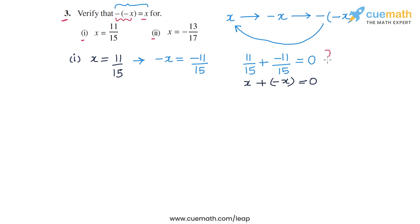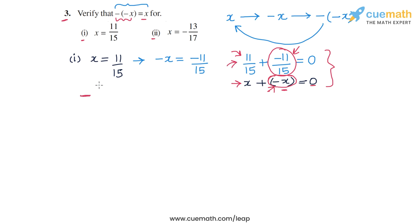The same equation also shows, from the point of view of negative x, that if you add x to minus 11 by 15, you get 0. So what is the additive inverse of minus 11 by 15? The number that when added to minus 11 by 15 gives you 0 is 11 by 15. So the additive inverse of minus 11 by 15 is 11 by 15. This verifies that negative of negative x is equal to x.